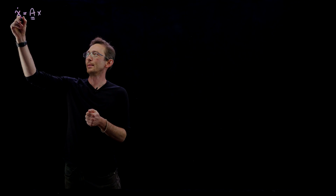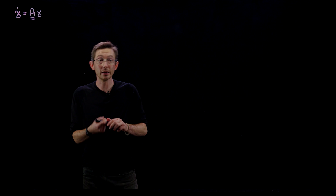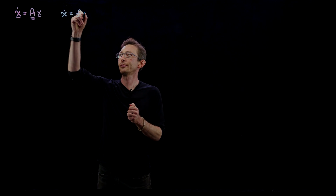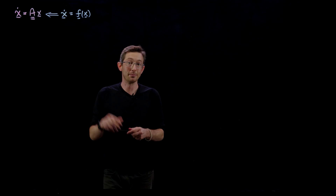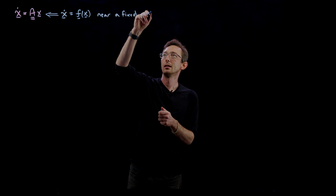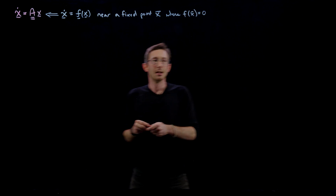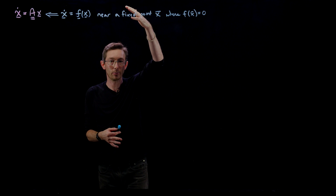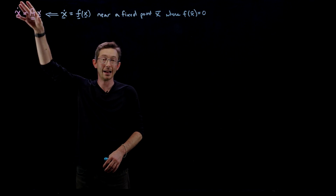Welcome back. We've been talking about linear systems of differential equations like x-dot equals Ax, where A is a matrix and x is a vector. We've recently seen that it may be possible to take a truly nonlinear differential equation, x-dot equals f(x), where f is a nonlinear function of x, and at least approximate it locally by a linear system near a fixed point x-bar where f(x-bar) equals zero.